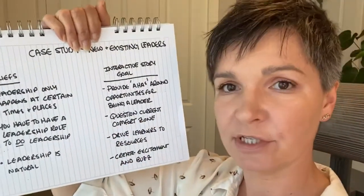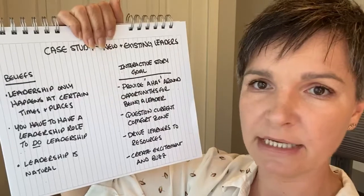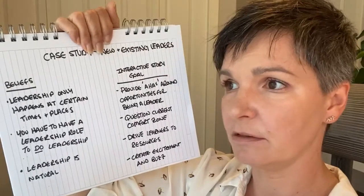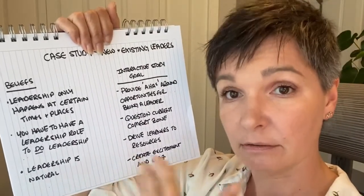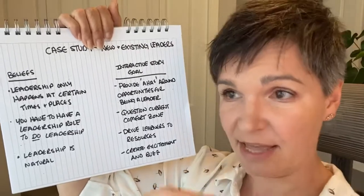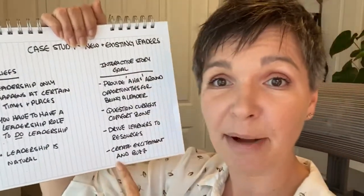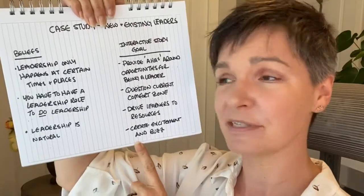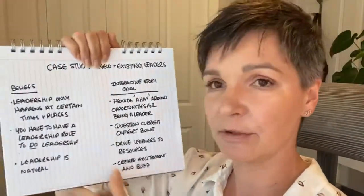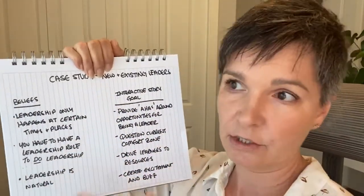They wanted to question the current comfort zone of people — are we doing the best we can? Are we having the leadership that we need? Are we too comfortable right now? They also wanted this story to have a very practical point — at the end, they wanted people to be aware of all the resources available to help them, and to create excitement and buzz about something awesome, something new, something exciting, something different. So this was a whole orchestrated campaign. I really talk about this because an interactive story does not live by itself — an interactive story is a catalyst for other things to work.